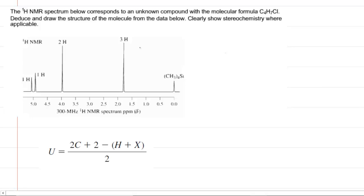We have the proton NMR spectrum given for an unknown compound. We do know the molecular formula of the compound, and any time a question gives you the molecular formula, the first thing you should be thinking about is calculating the elements of unsaturation, sometimes called the degrees of unsaturation, and that is given by this formula right here.